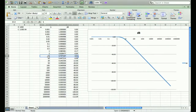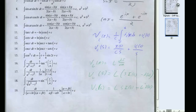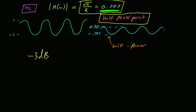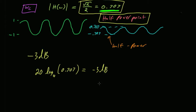If you take 20 log base 10 of 0.707, you get negative 3 dB. So sometimes we call our cutoff frequency the 3 dB point.